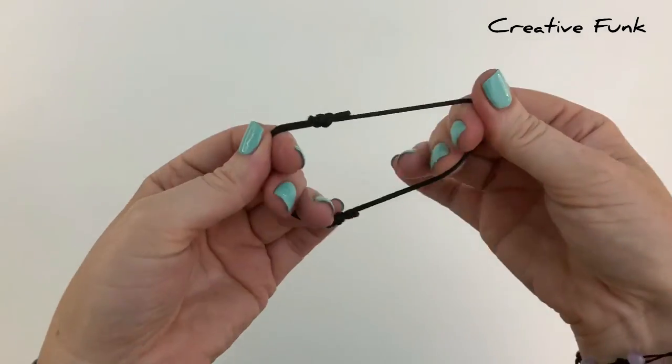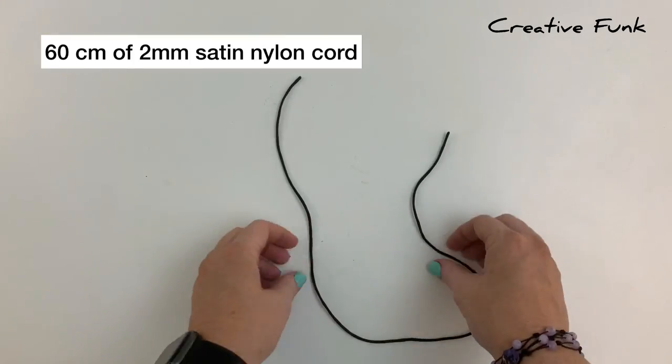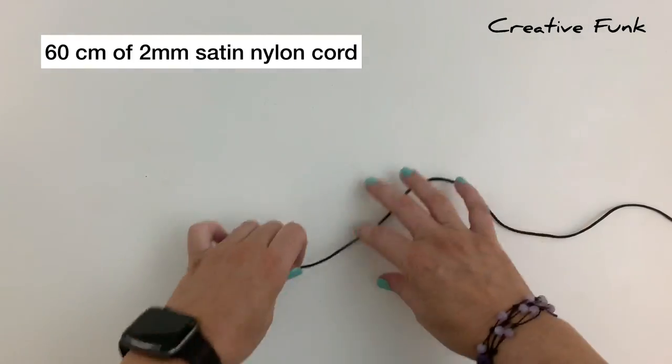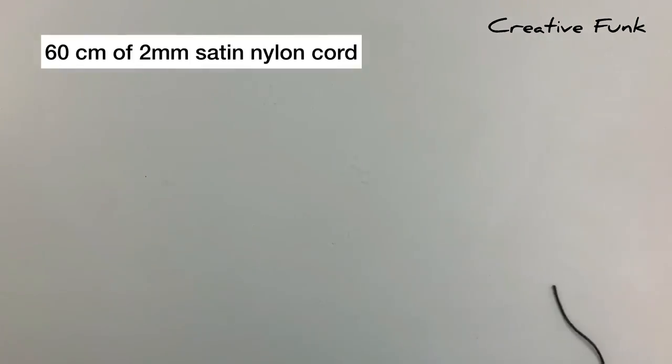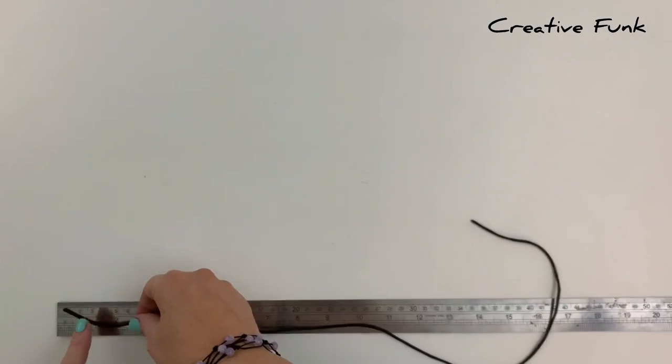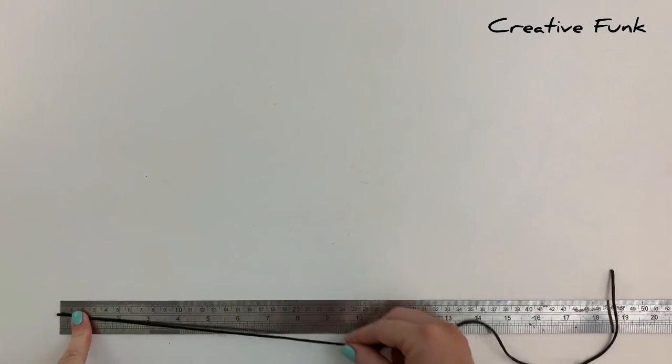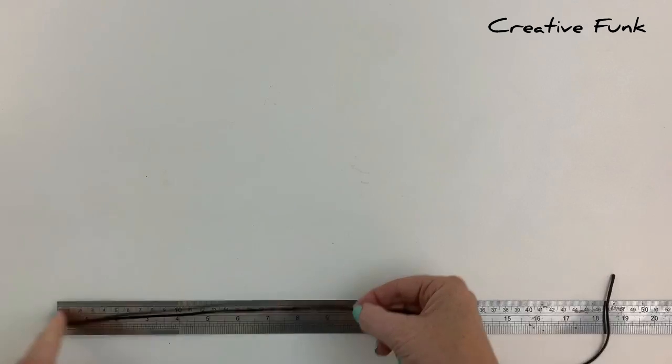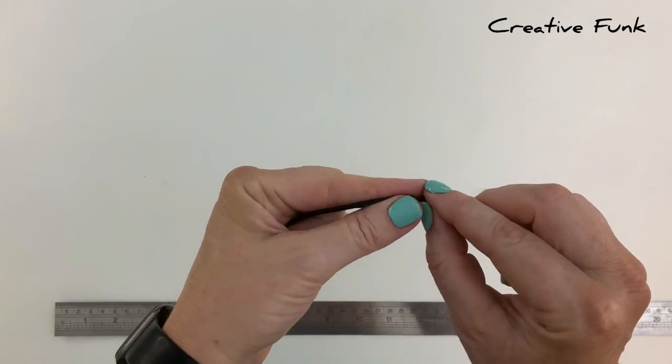For our design today we're using 60 centimeters of two millimeter satin nylon cord, and we're going to start by making our barrel knot for the center. Just measure along about 10 inches and then hold that 10 inch mark against your left index finger.